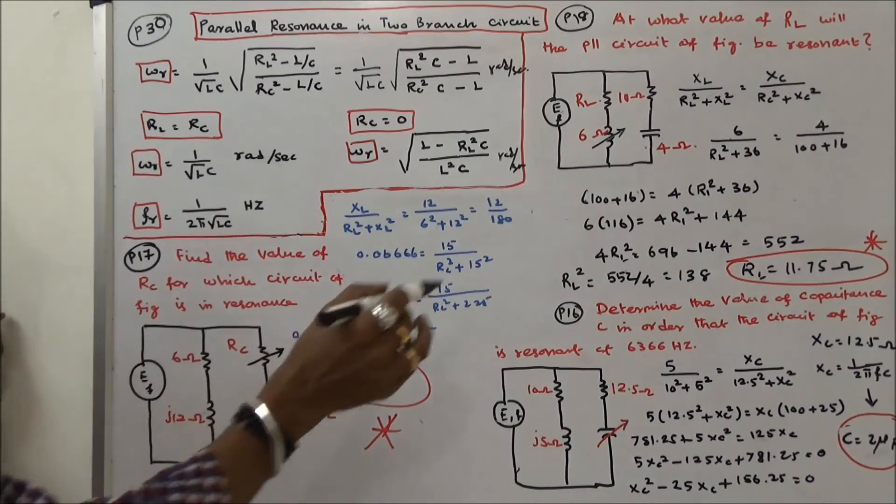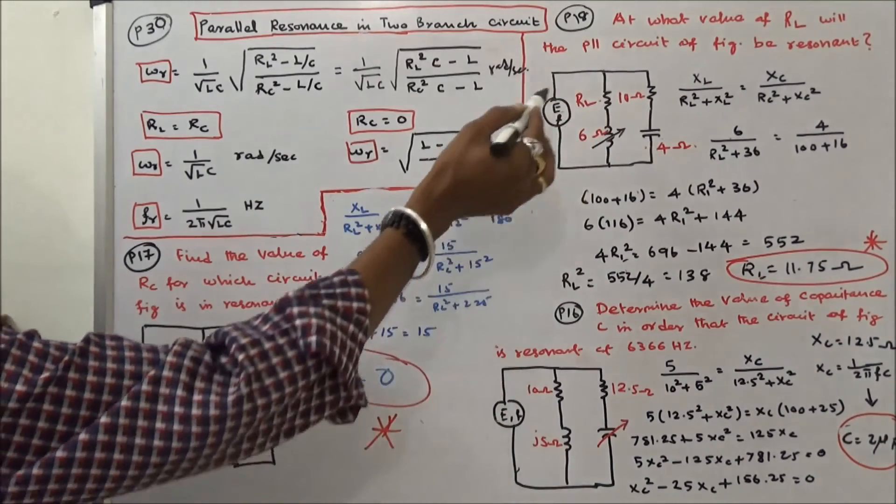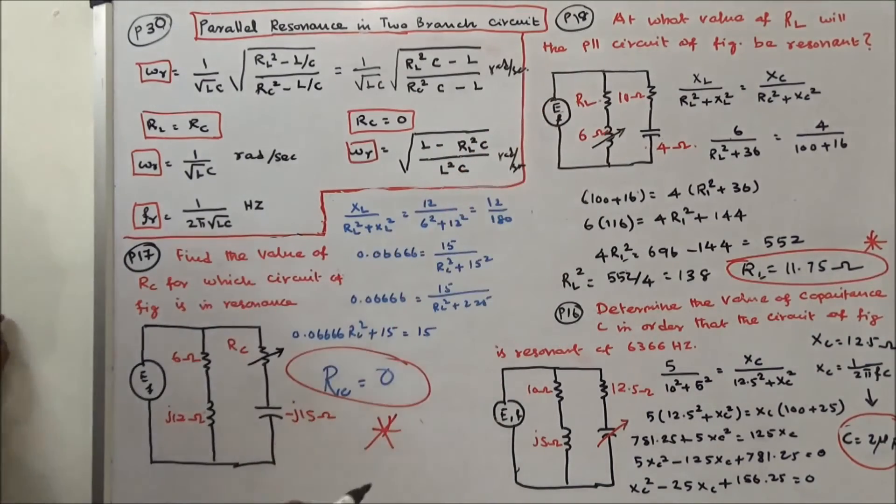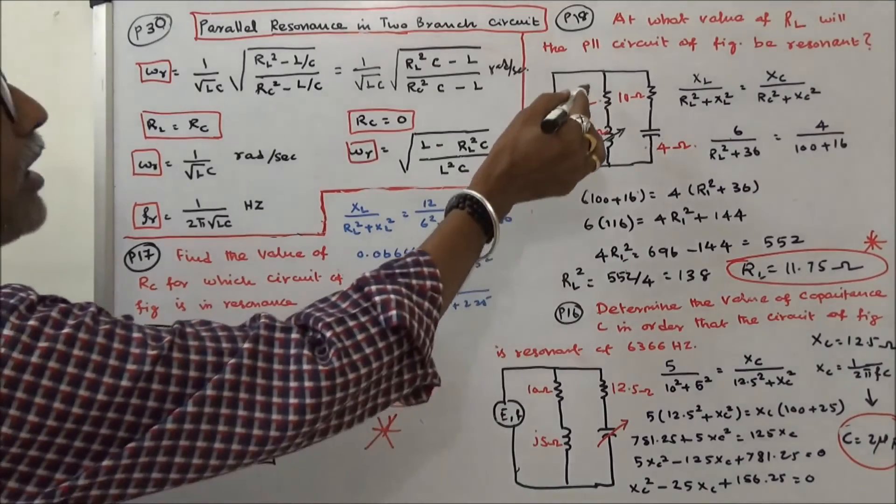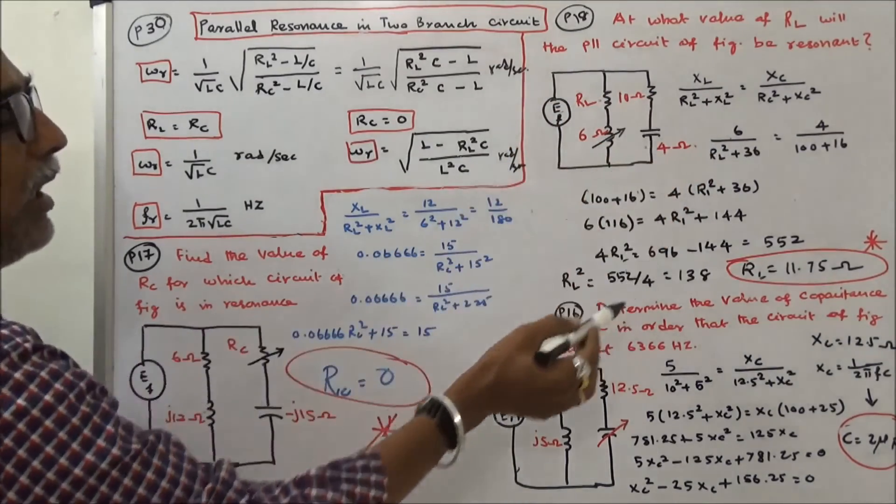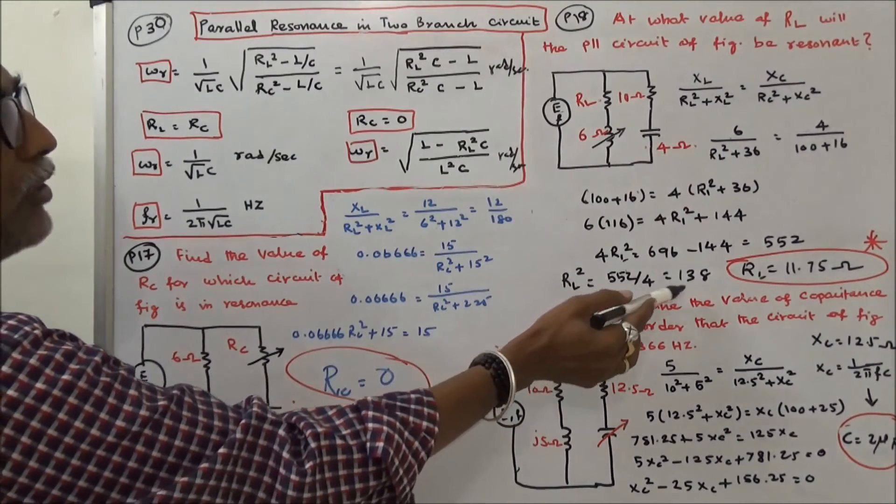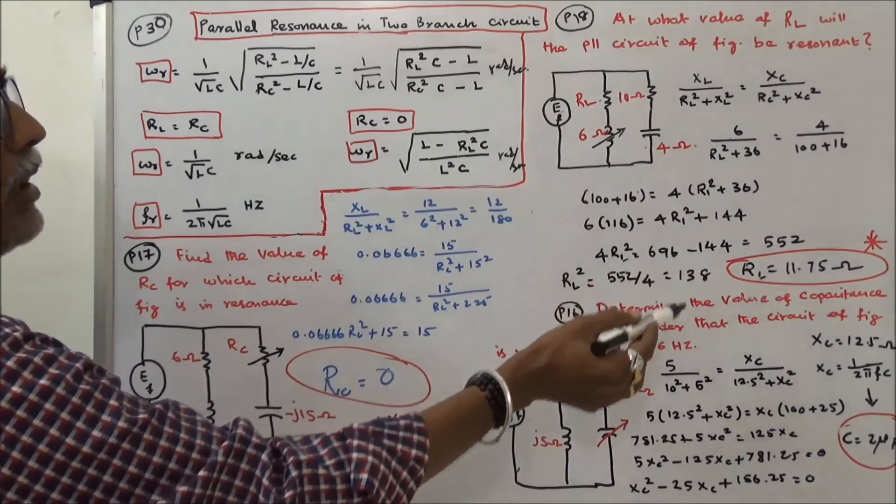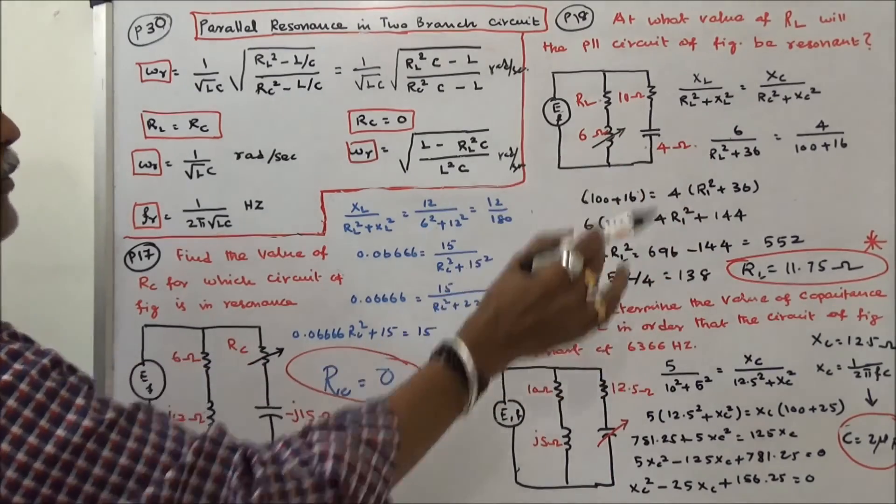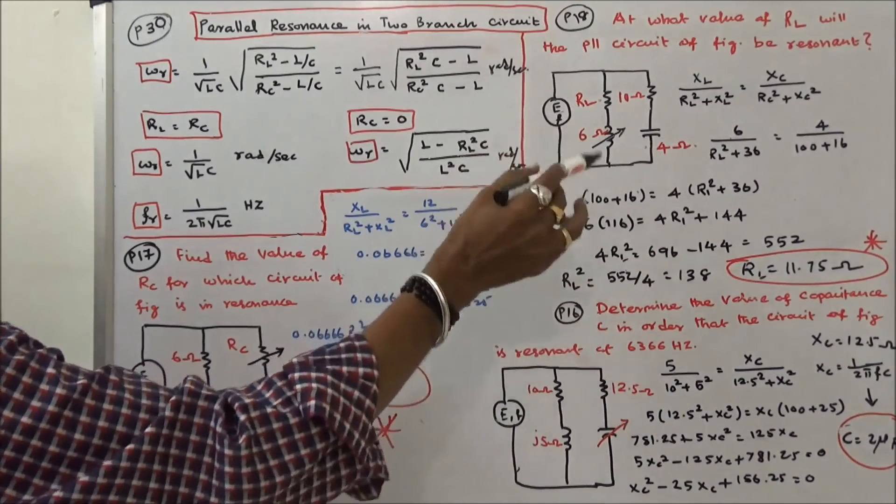The last problem, at what value of Rl will the parallel circuit of figure be resonant? You have to calculate Rl. Again, the same condition. Substitute all the values. Rl square is equal to 552 by 4, that is equal to 138. Rl is equal to 11.75 ohms. If Rl value is 11.75, the circuit will resonate.